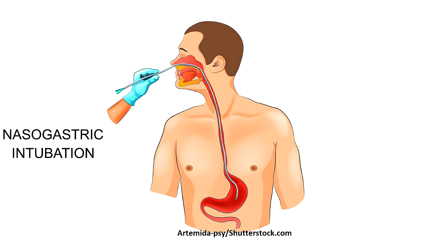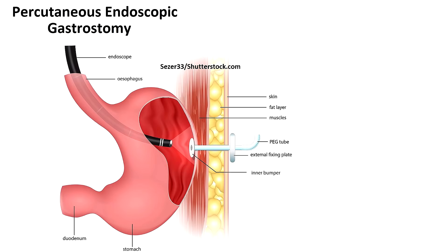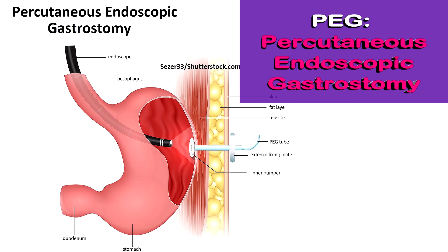Lastly, medications can also be administered through some type of tube, like a feeding tube. One way is through a nasogastric tube, abbreviated NGT, where a tube is inserted through the nose, down into the esophagus, and into the stomach. Another popular way is through a PEG tube. PEG stands for percutaneous endoscopic gastrostomy, and this is where a tube is inserted surgically through the skin and sits inside the stomach.